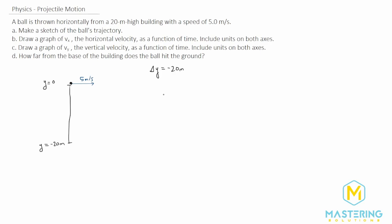Before we can draw either of the graphs we actually have to solve part D first. It's kind of backwards that they had us do A then B then C then D, because we need to do D first. This is a two-step problem, so first we need to figure out how long the ball is in the air.